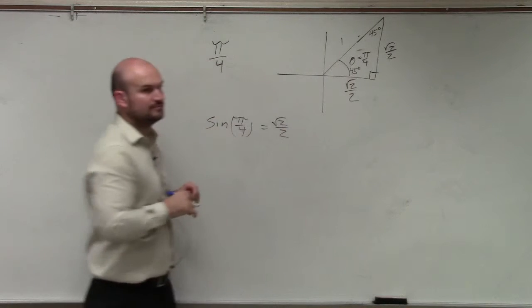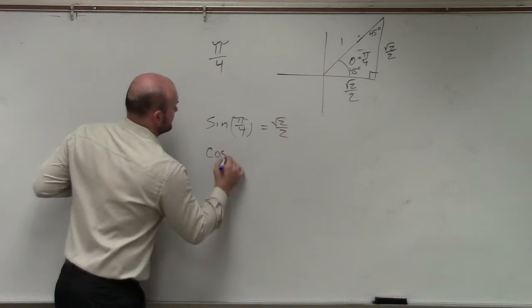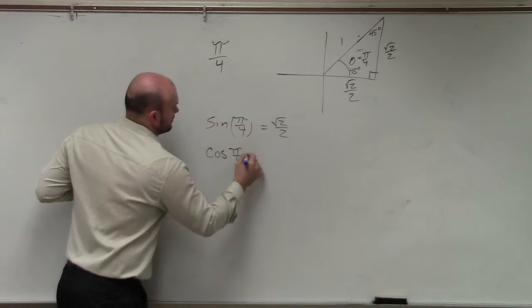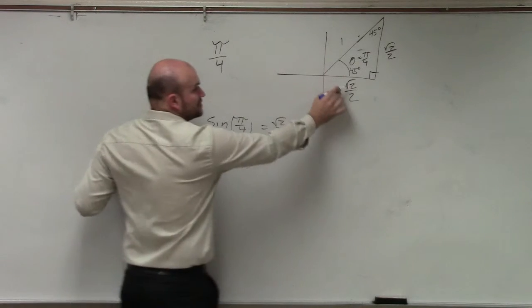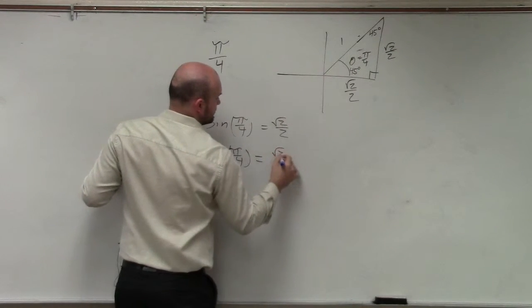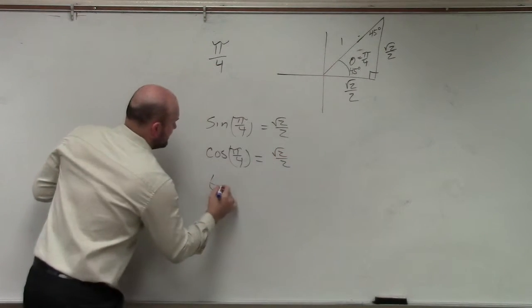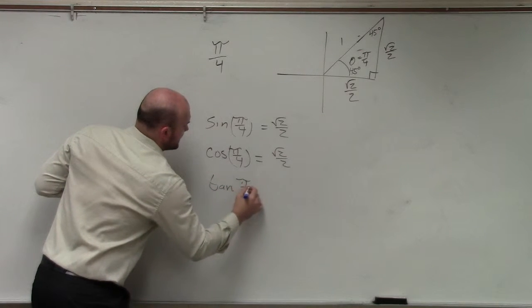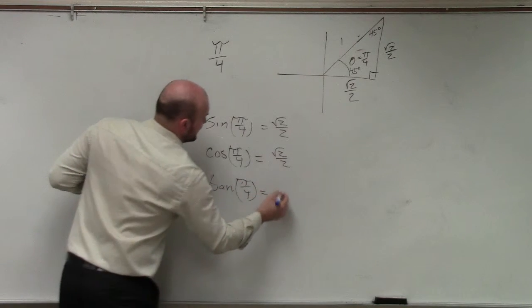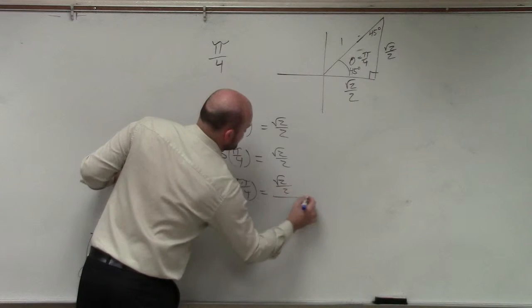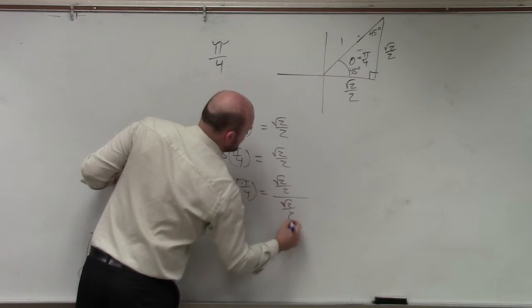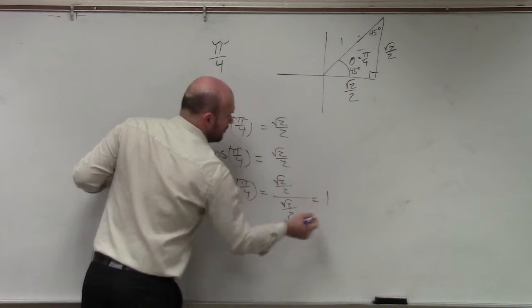So the cosine of π/4 is adjacent over hypotenuse, square root of 2 over 2. And the tangent of π/4 is square root of 2 over 2 divided by square root of 2 over 2, which is 1.